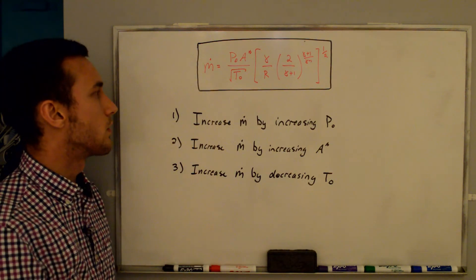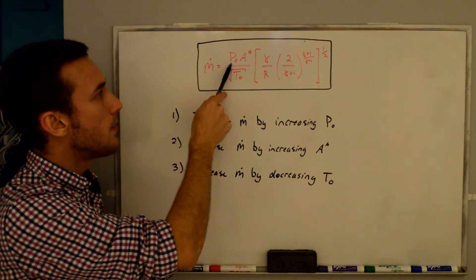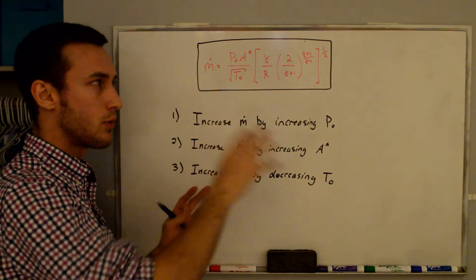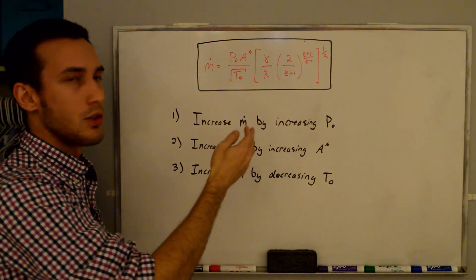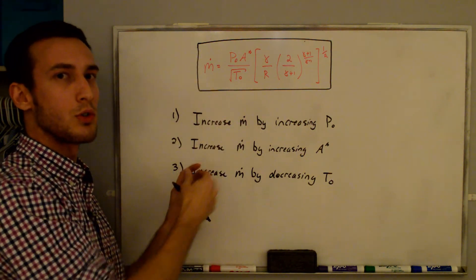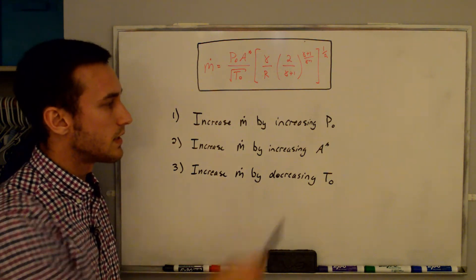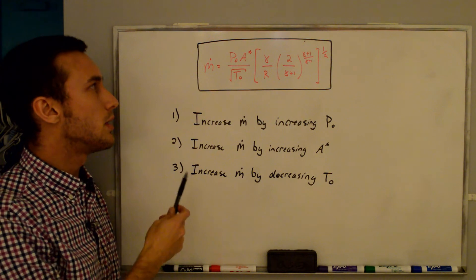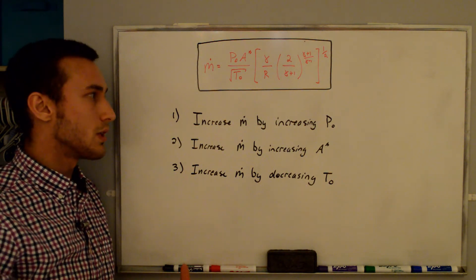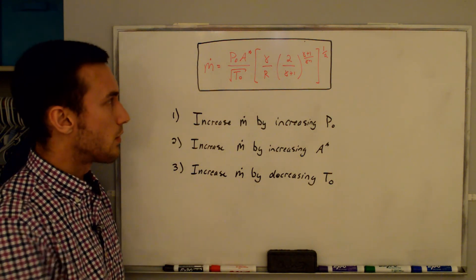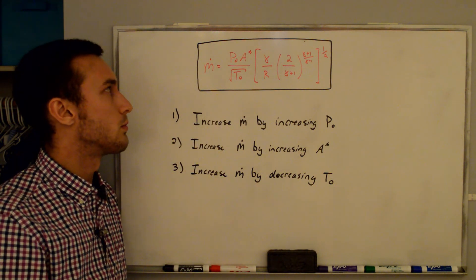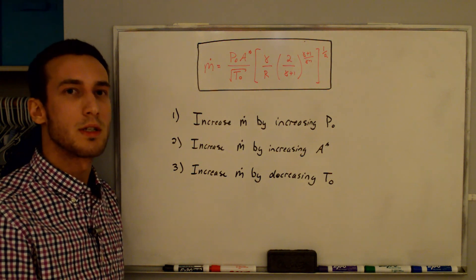Some final notes: we can increase the mass flow rate by increasing the stagnation pressure P₀ in the reservoir — even though dropping back pressure can't increase ṁ once choked, raising P₀ can. We can also increase ṁ by increasing A*, the throat area. We can compute ṁ with A* even when the flow is not choked, but A* is not then the actual minimum area and the result isn't physically meaningful. Finally, decreasing stagnation temperature T₀ increases ṁ. This equation is extremely useful and can predict accurate mass flow rates, which I'll explore in subsequent videos.